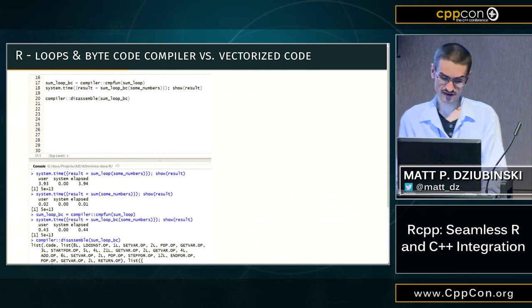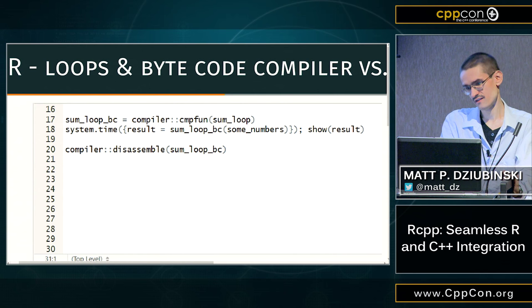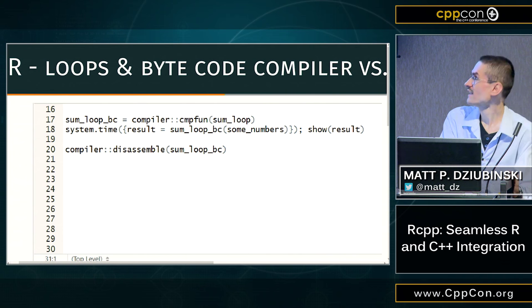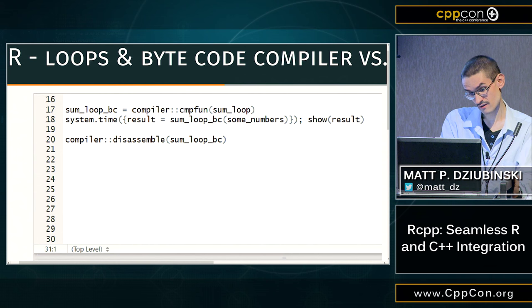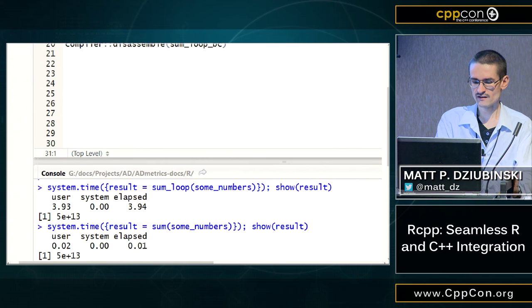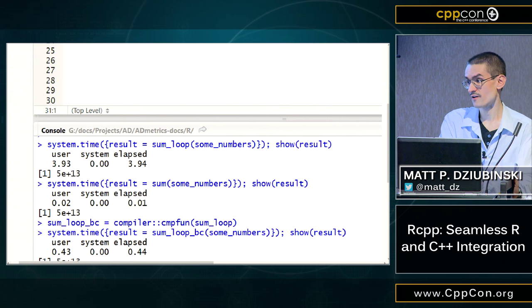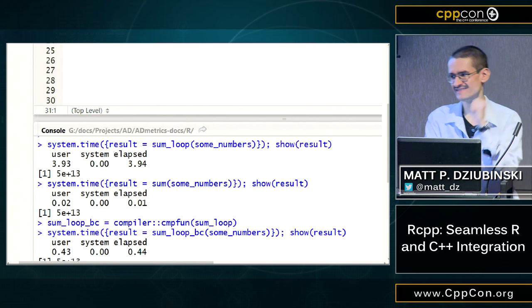R is basically implemented as a virtual machine. Virtual machines have bytecode. We can pre-compile the bytecode, and we can also look at the disassembled bytecode, which is sometimes illuminating. Comparing results, we now get a new result — it's no longer 400 times slower, it's only 40 times slower. That's a 10x speedup. Let's focus on the 10x and forget about the rest.